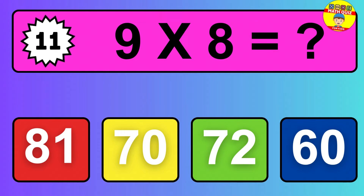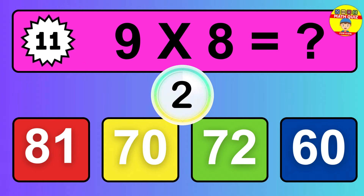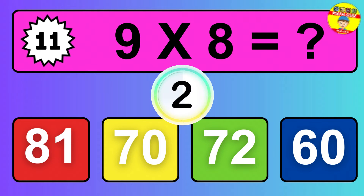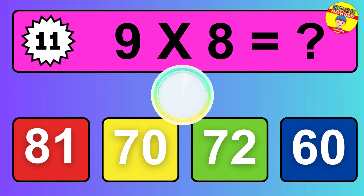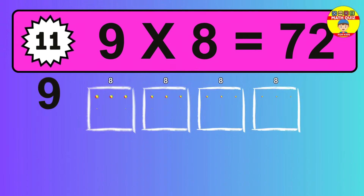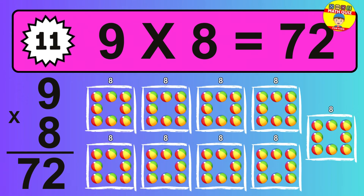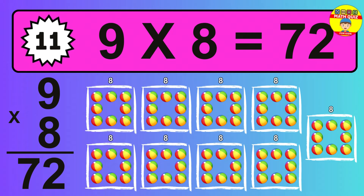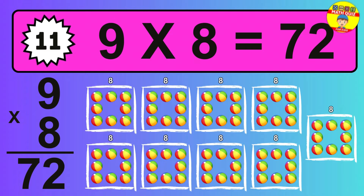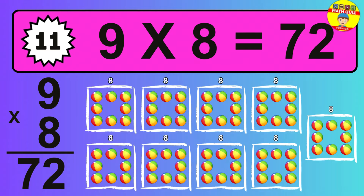Question 11. 9 times 8 equals what? The answer is 9 times 8 is 72. To calculate, we have 9 groups with 8 balls each one. So, how many balls do we have? 72 balls.